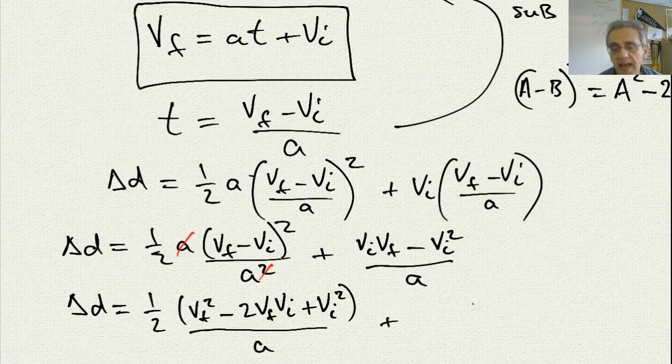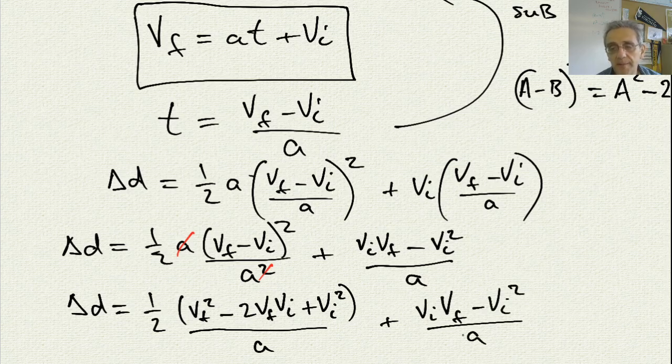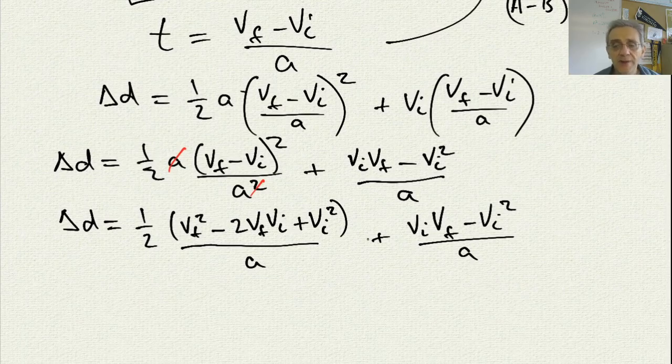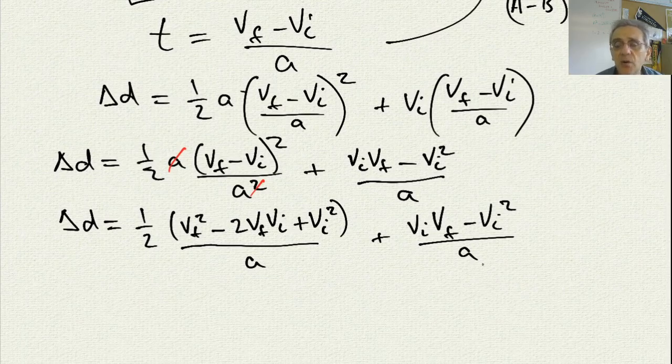And then I have my plus vi, v-f minus vi squared all over a.